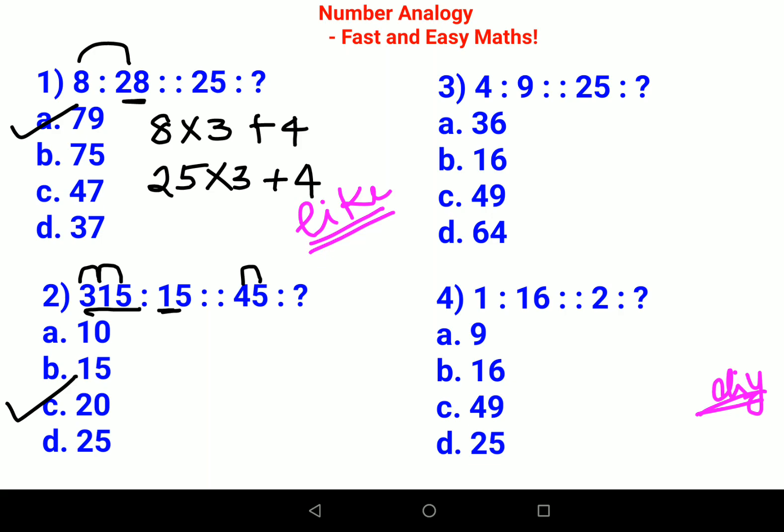Now over here, this one is a bit tricky and a lot of my students messed up in this one. What they have given over here is 4 is to 9, then 25 is to what. Now obviously this is 2 square is to 3 square.